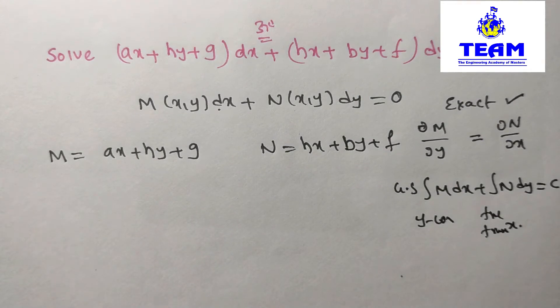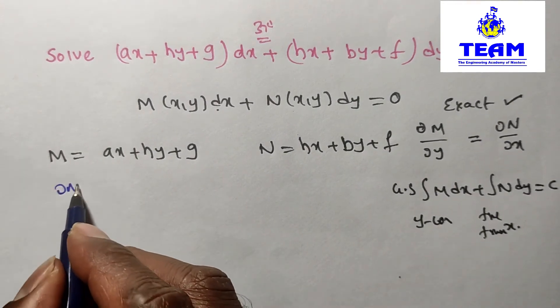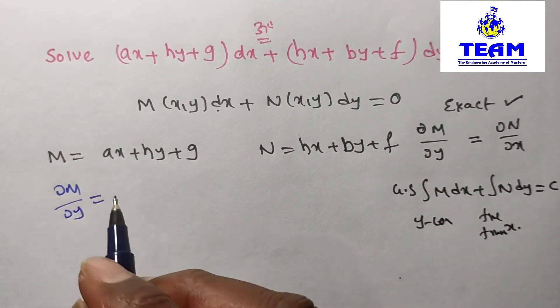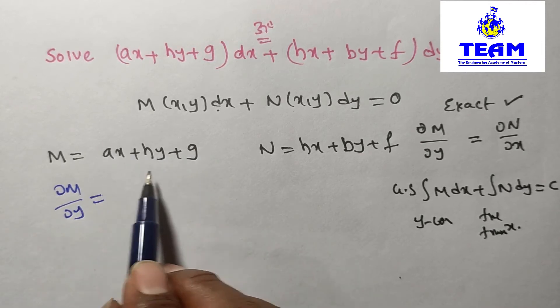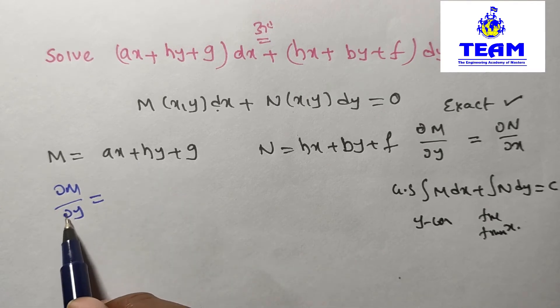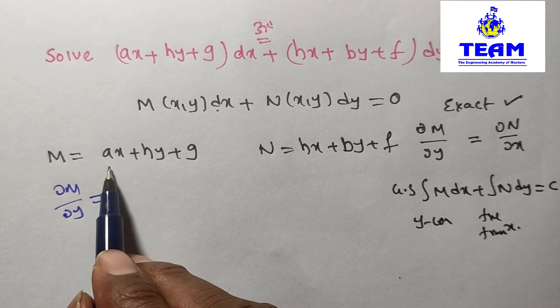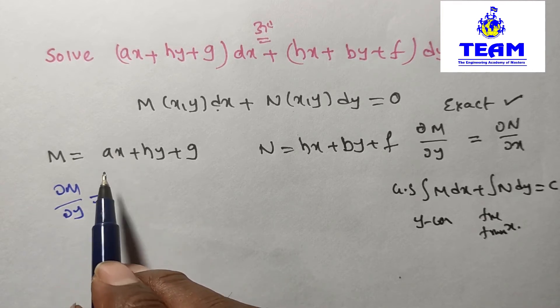Now I am finding ∂M/∂y. This means I am differentiating M partially with respect to y. M contains three terms, the sum of three terms. While differentiating partially with respect to y, we treat all other variables as constant. Is it containing a y term? No. So this is independent of y. We can treat this as a constant.